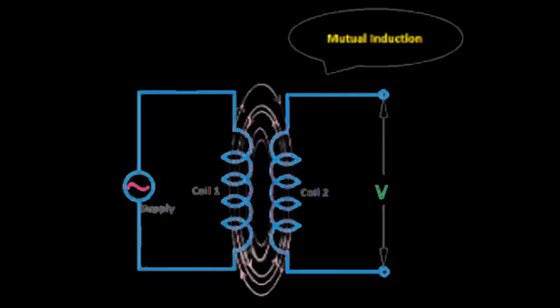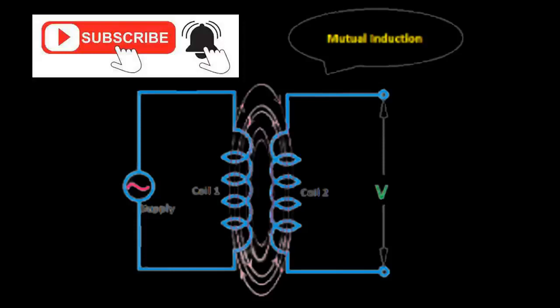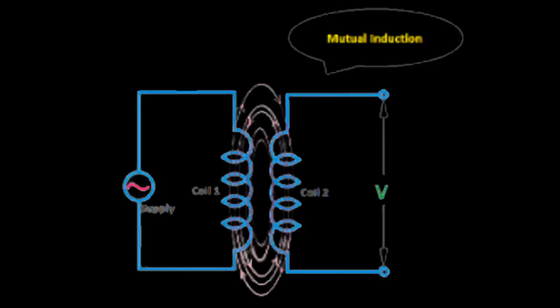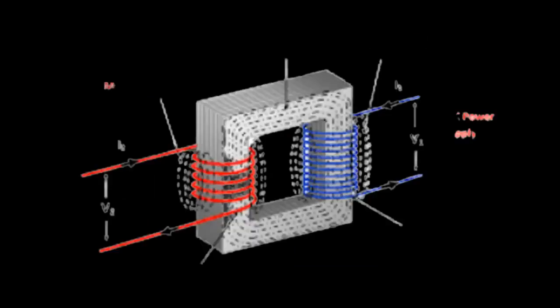The core provides a magnetic path for the flux to connect with the secondary winding. The majority of the flux is linked with the secondary winding and this is referred to as useful flux or main flux.